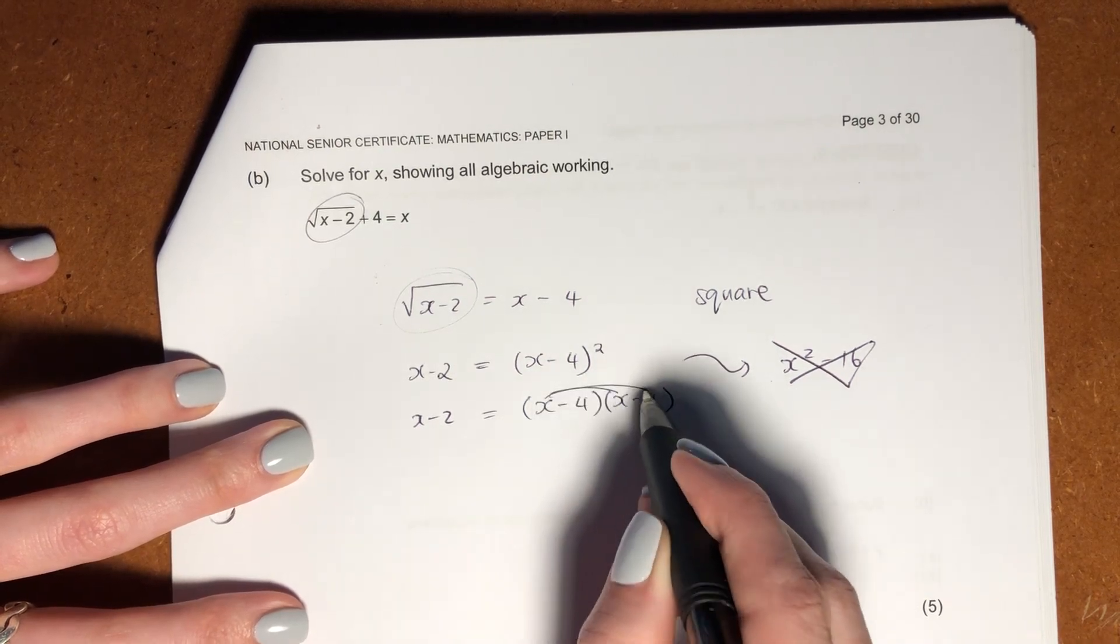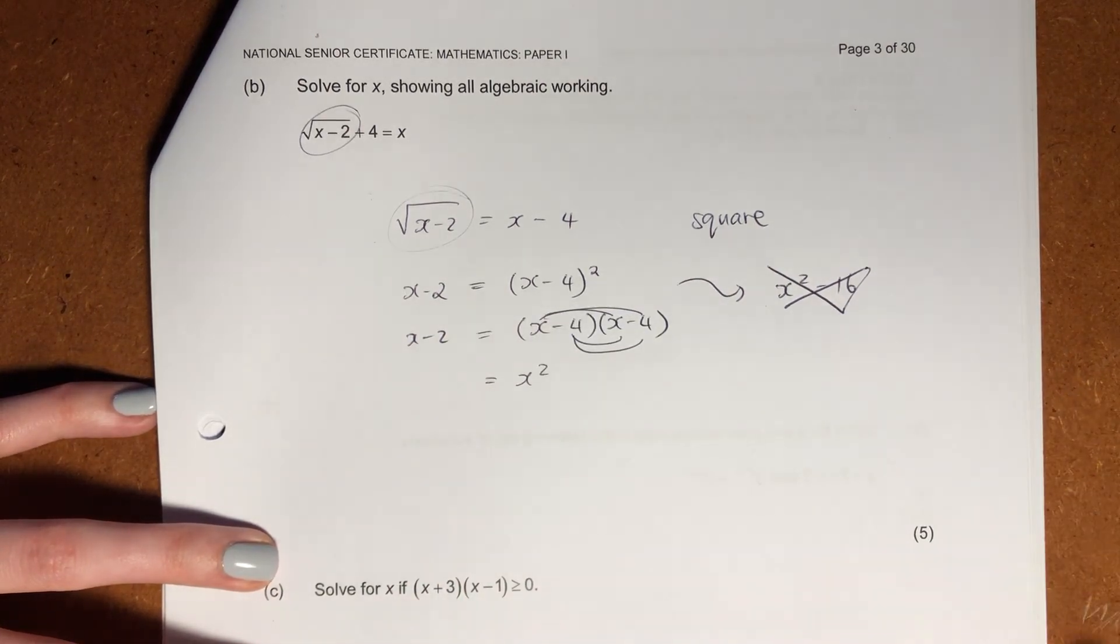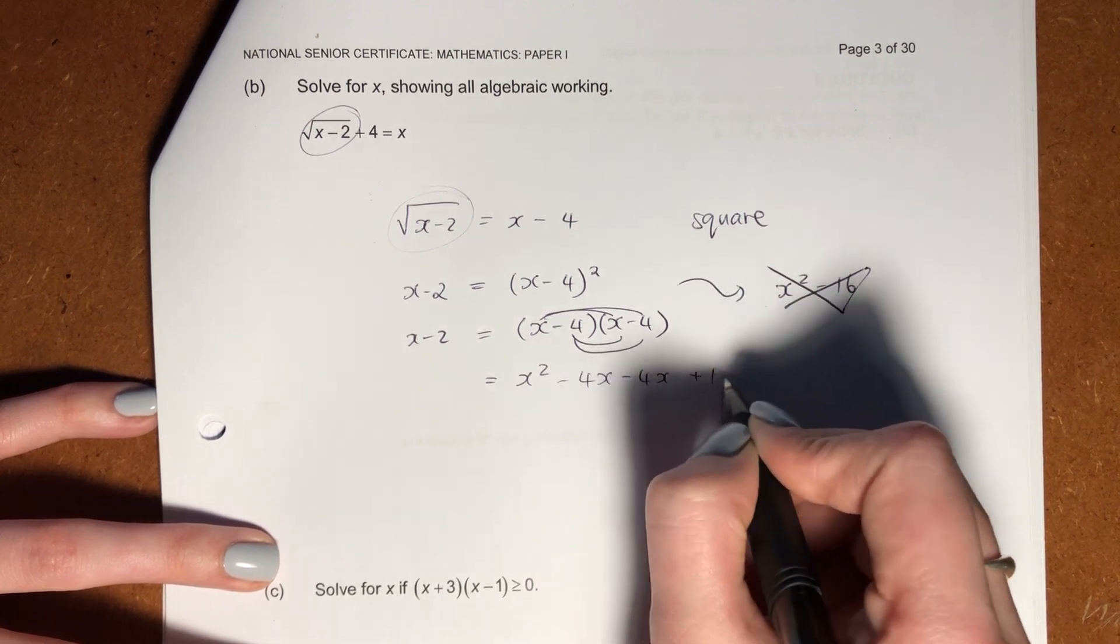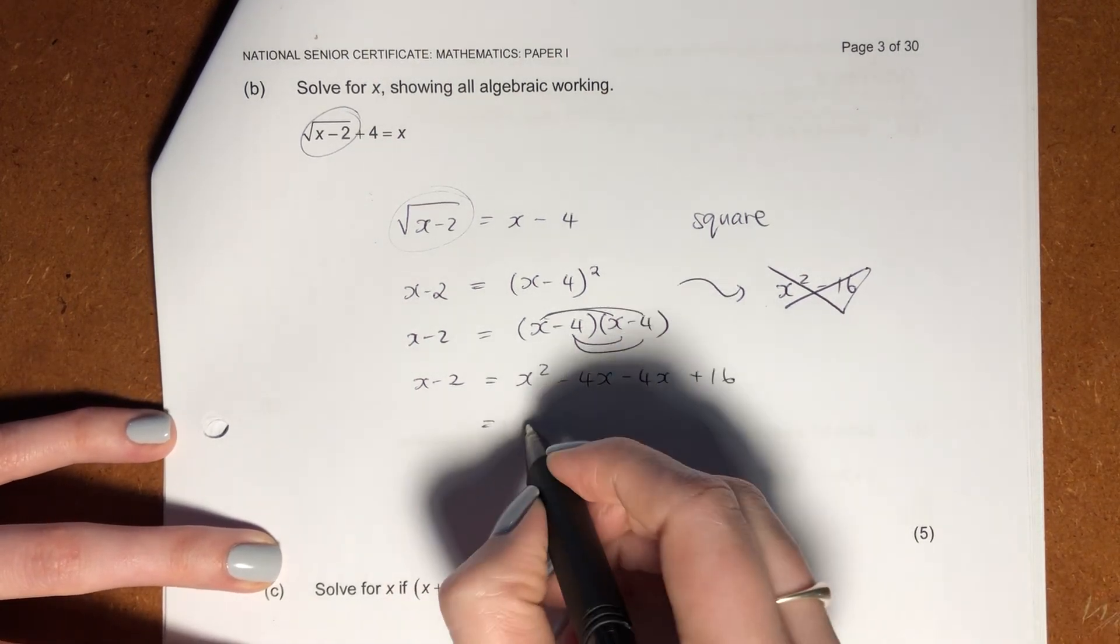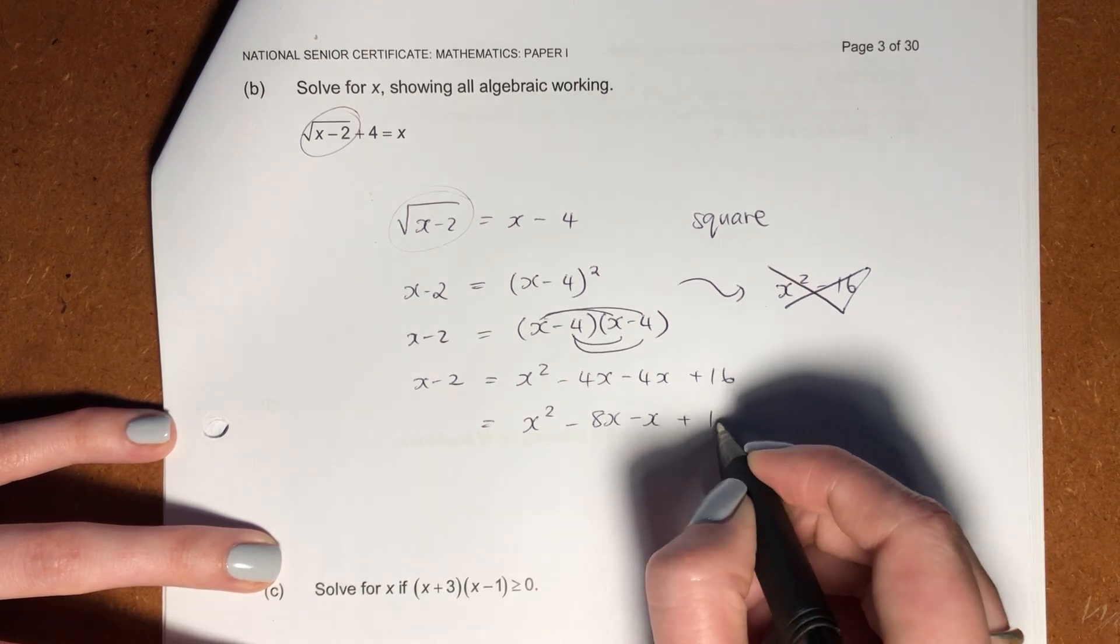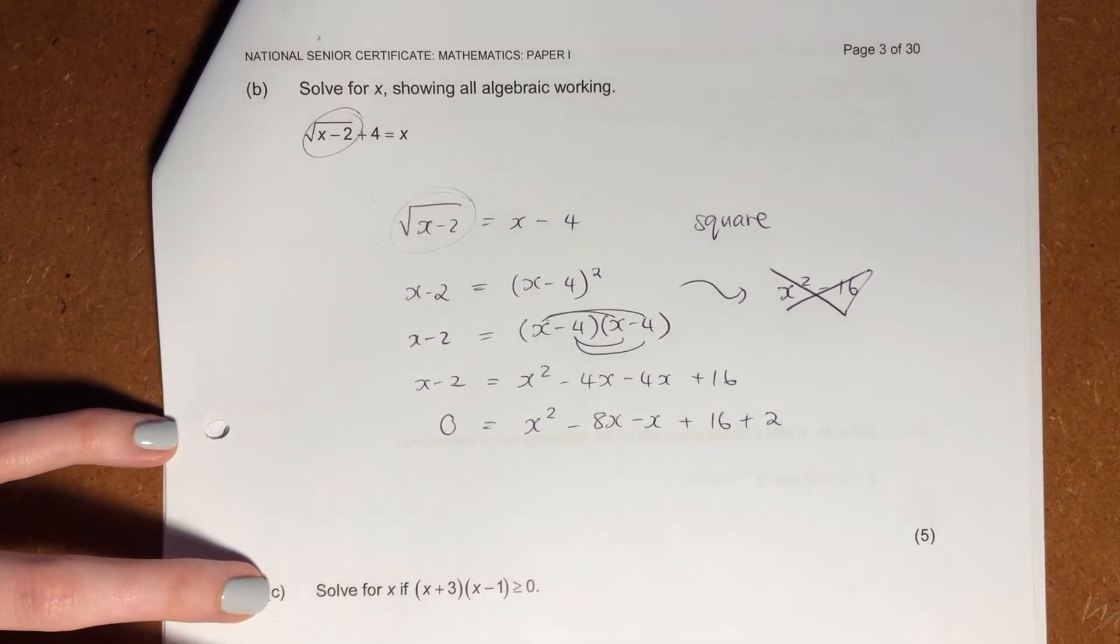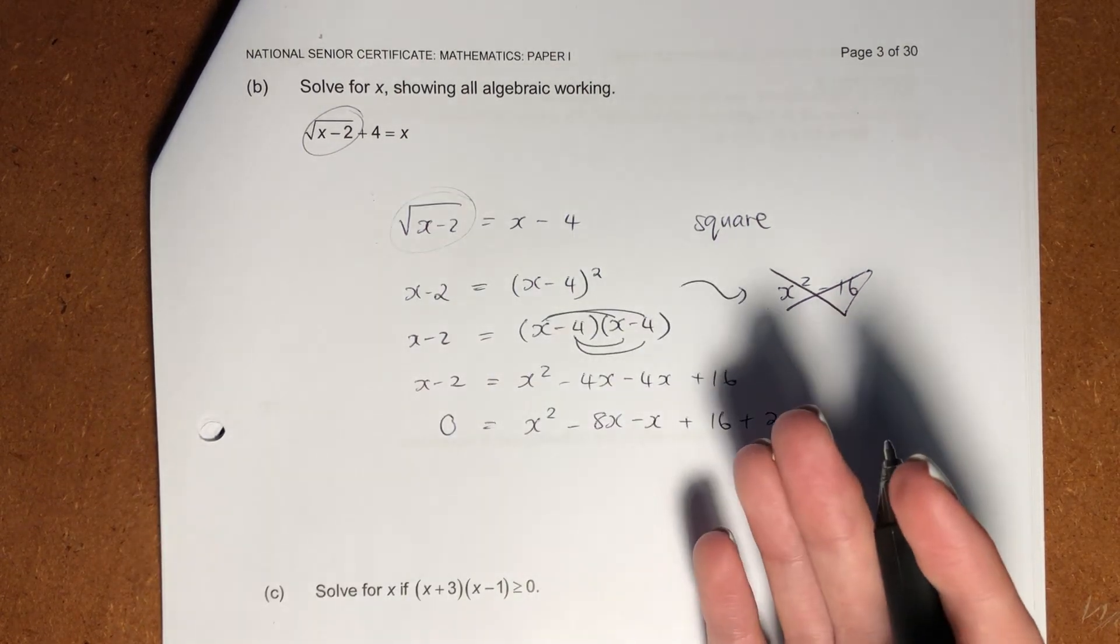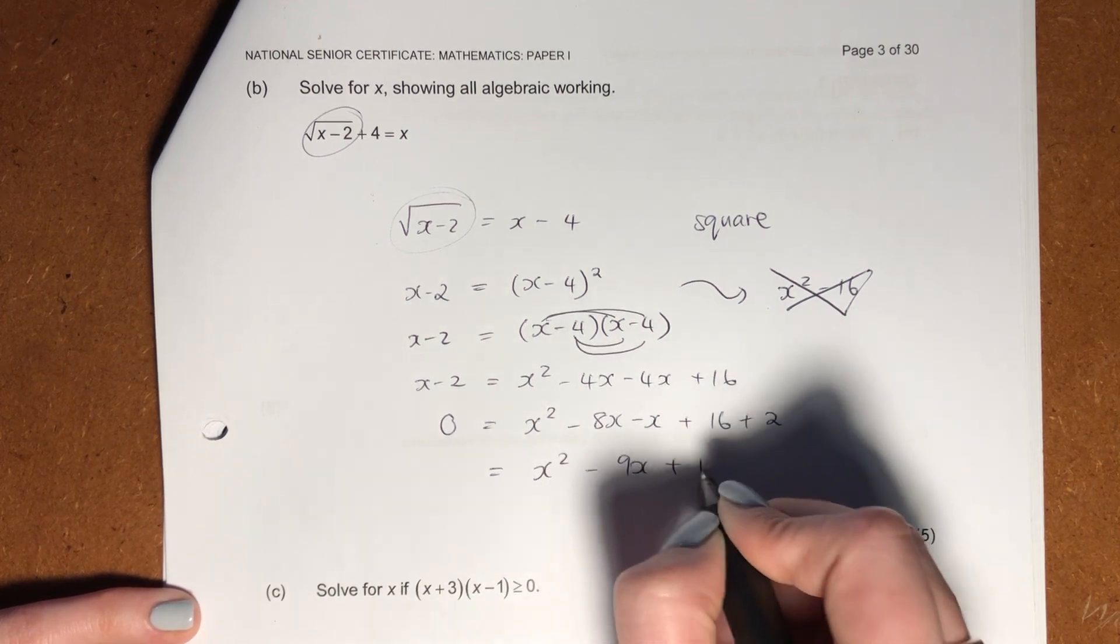So we do FOIL. Please remember your FOIL. That's from the grade nine maths. Times that out. It's going to become x squared minus 4x minus 4x plus 16. Perfect. Now, let's go tidy it up. So it becomes x squared minus 8x minus x plus 16 plus 2 equals 0. Remember, when we're solving, we generally want one side of our equation to be 0, because then we can factorize and then just solve for our x. So here, this becomes x squared minus 9x plus 18.